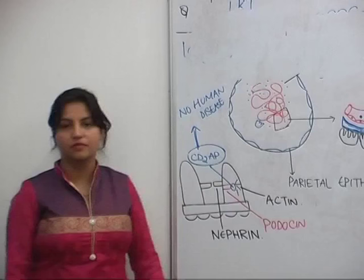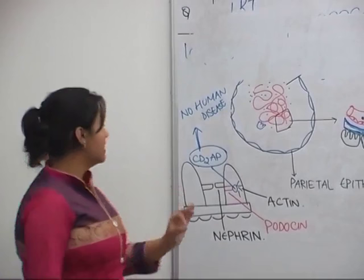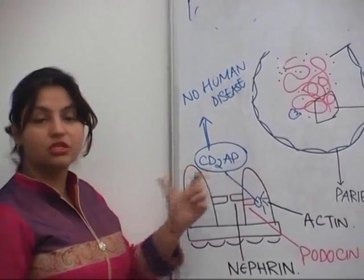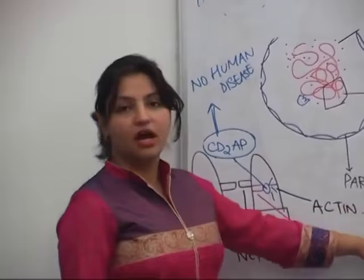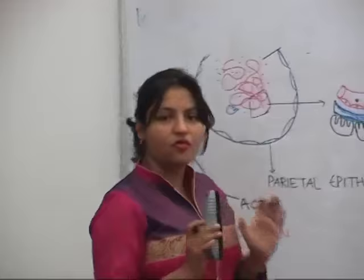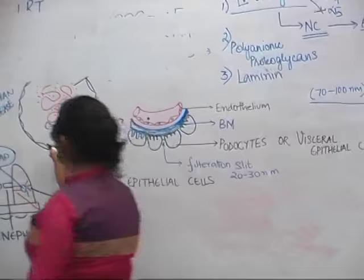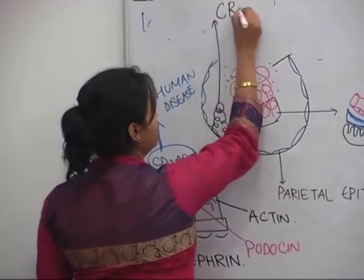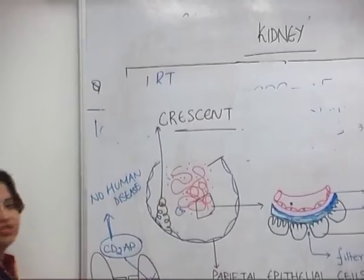Mutation in all these proteins can cause human disease except mutation in CD2AP. CD2AP mutation does not cause any human disease, whereas mutations in nephrin, podocin, and actin are all associated with human diseases. Additionally, the proliferation of parietal epithelial cells is known as a crescent - an important concept.